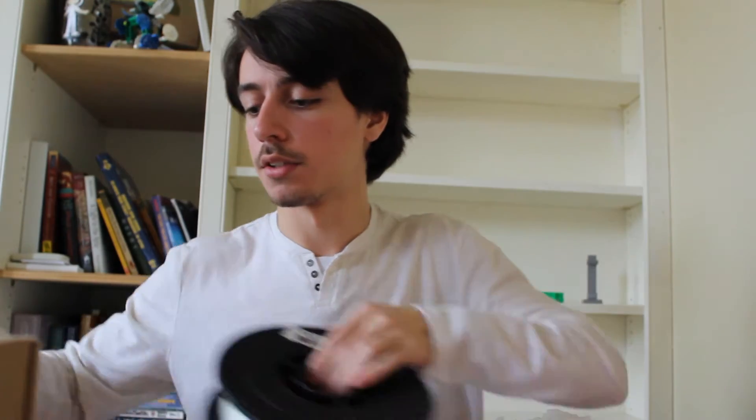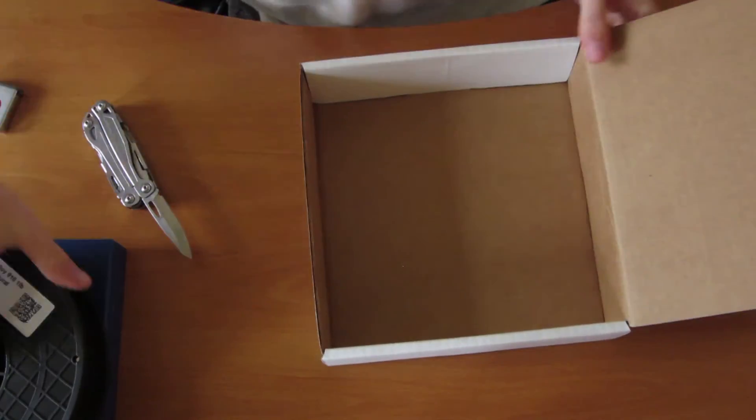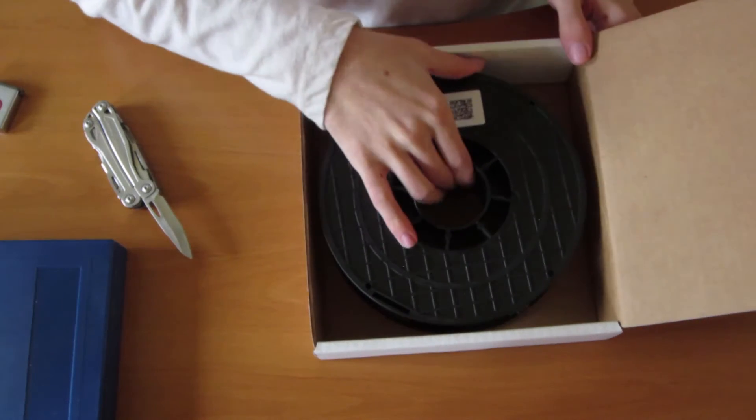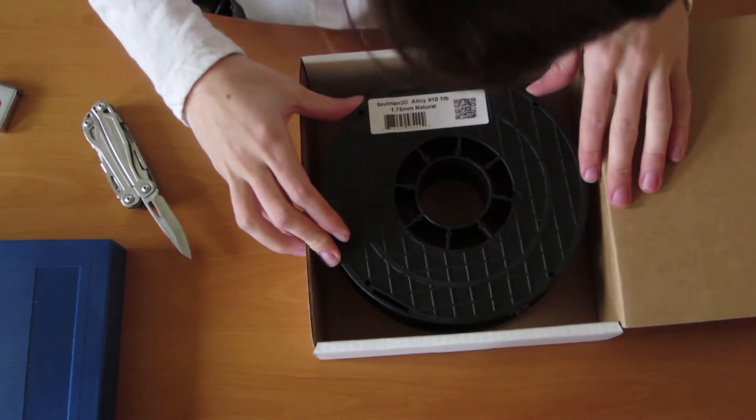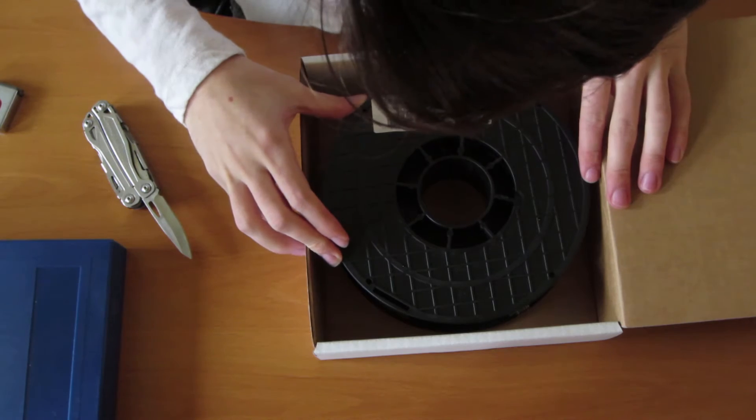And I'm going to make sure to save the desiccant bag so I can put that in the container once it's finished. You're going to open the box and then put the spool in the center and just get it as centered as possible.